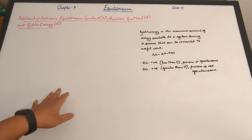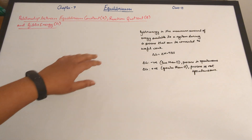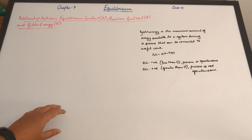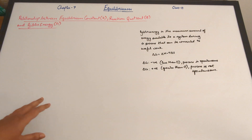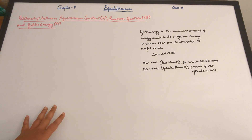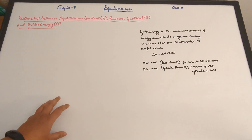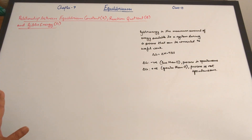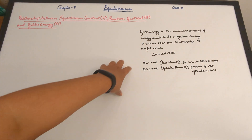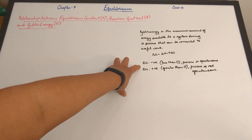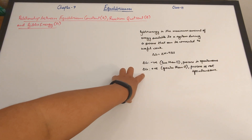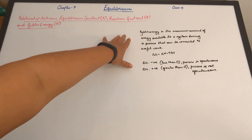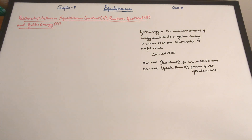You probably also learned that delta G, the change in Gibbs free energy, is equal to delta H minus T delta S, where delta H is the change in enthalpy, T is the absolute temperature, and delta S is the change in entropy. This is only to give you a basic idea of Gibbs energy. When delta G is negative — less than zero — the process is spontaneous. When delta G is positive — greater than zero — the process is not spontaneous. This is all we need to know for this particular video.